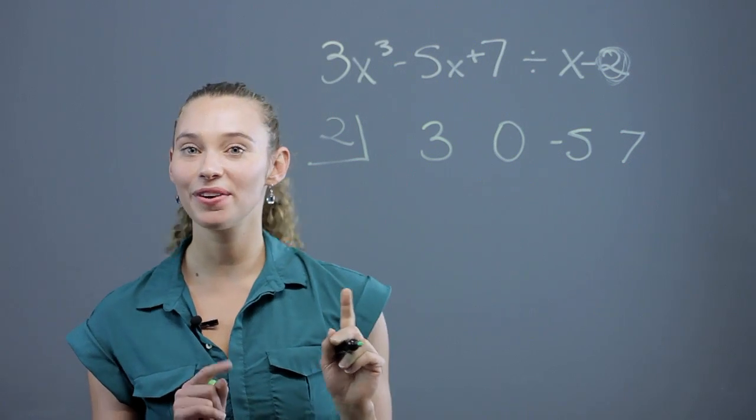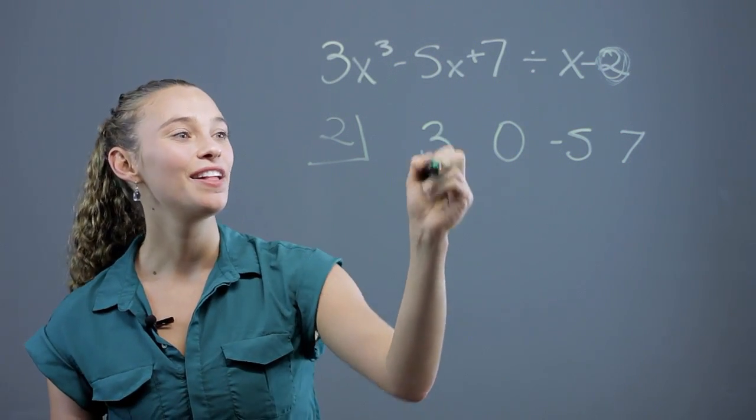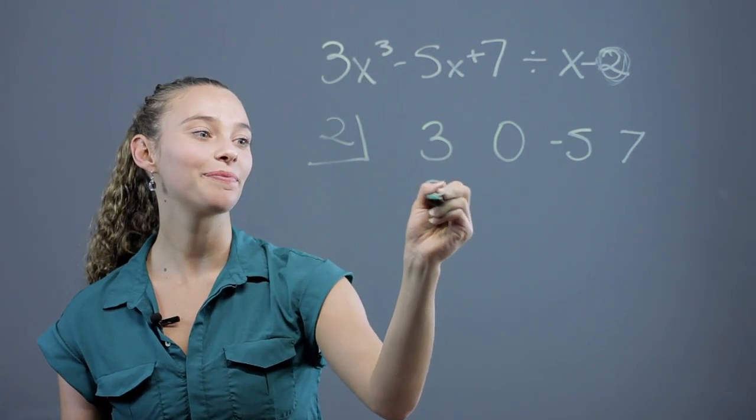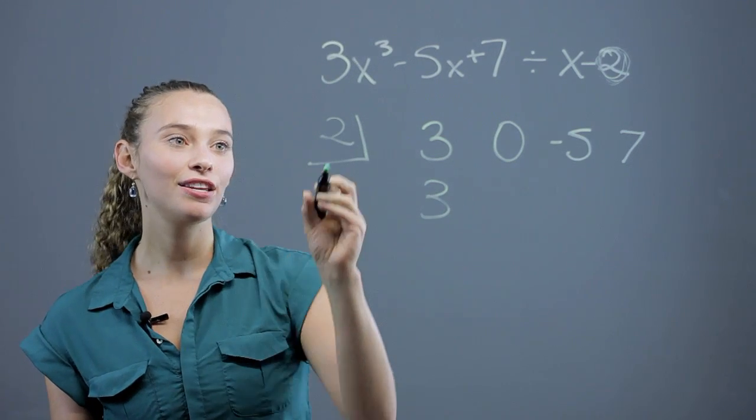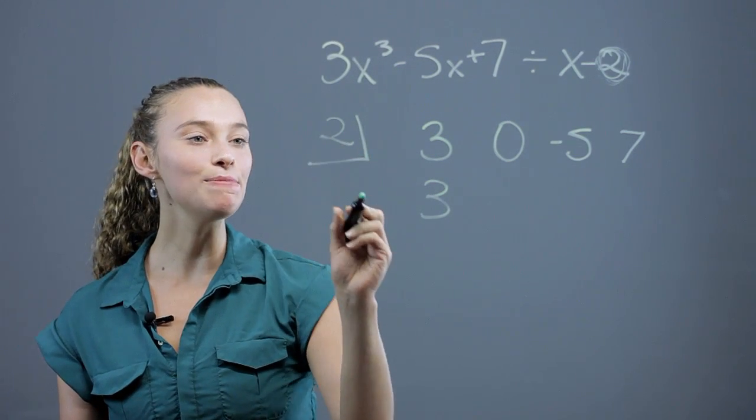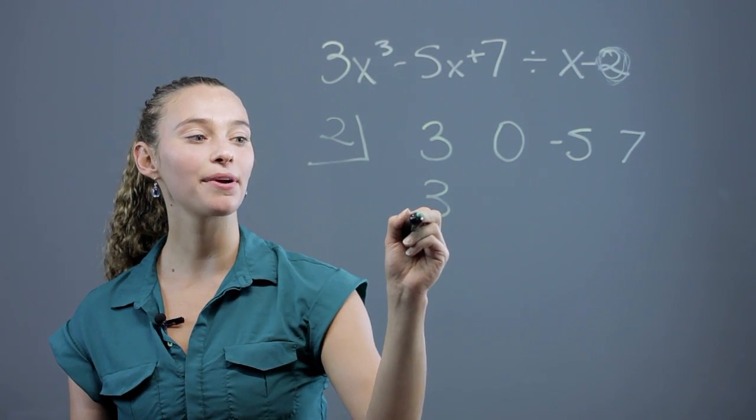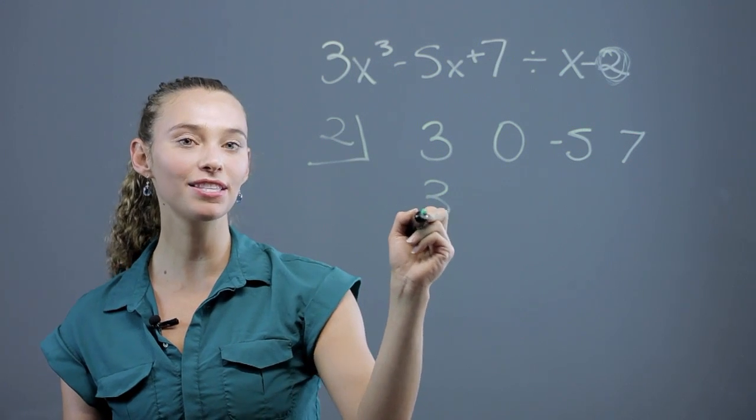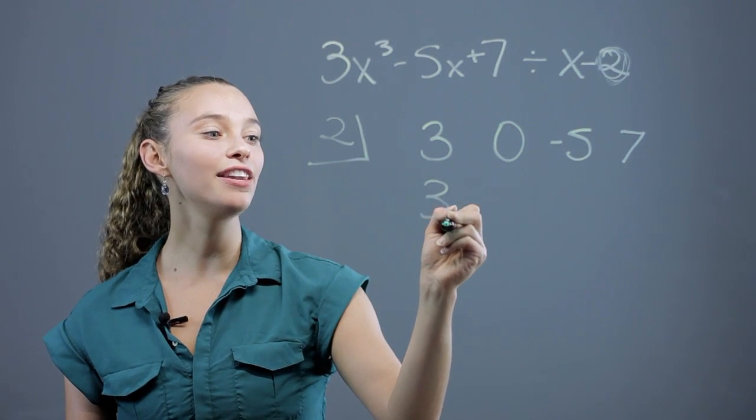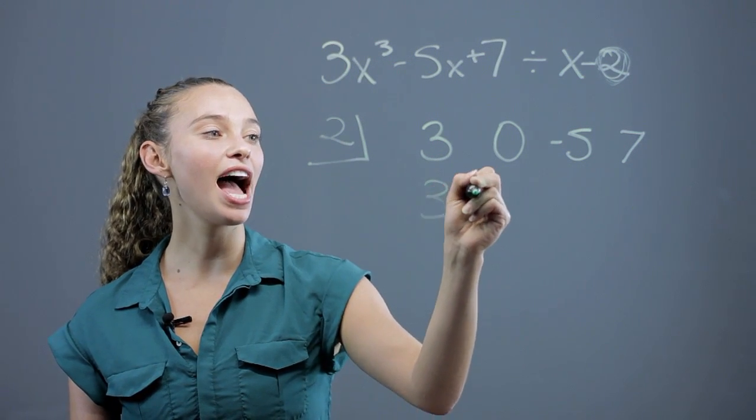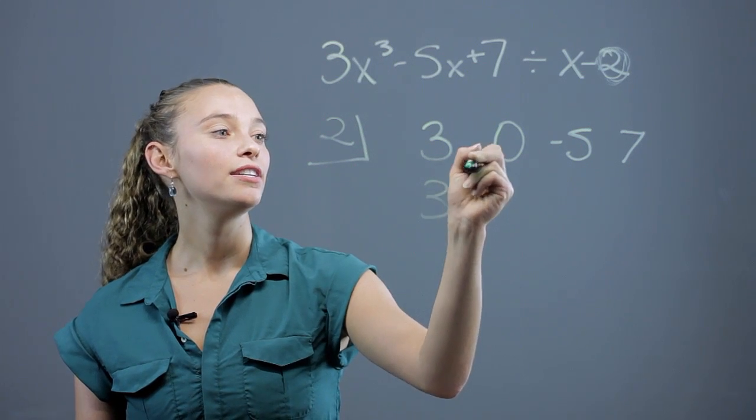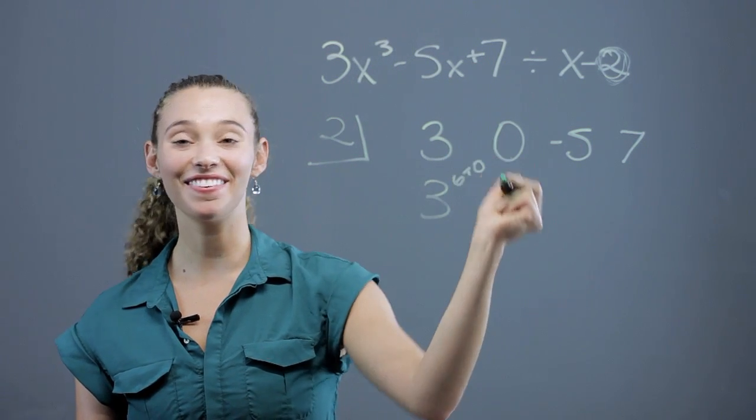Now, we're going to do this cool thing called the box method. The first number you just bring down. It's 3. Then, you use the number in the box, and you multiply it with the number here. 2 times 3 is 6. And then you take that, and you add it to the next number up here, plus 0.